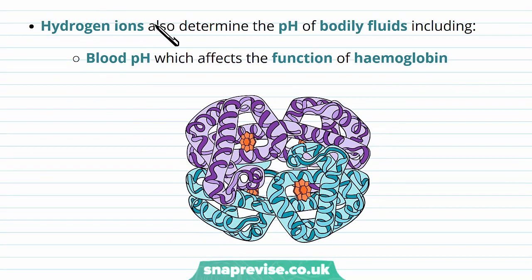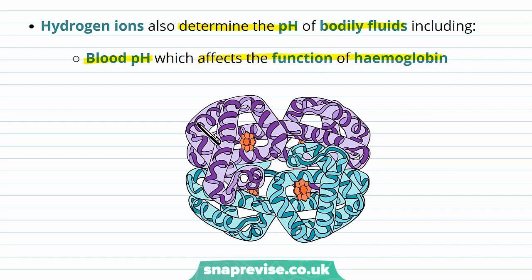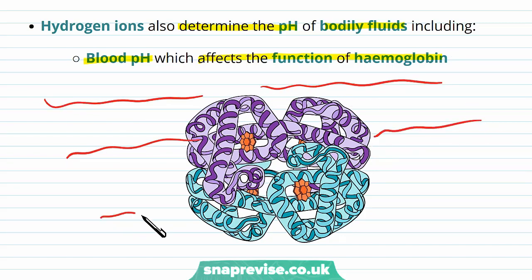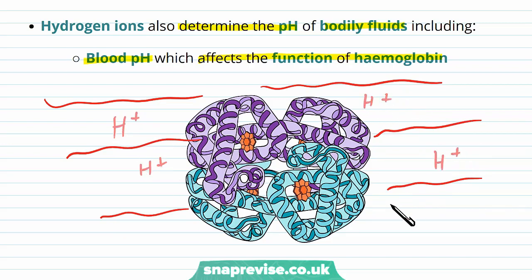Hydrogen ions are also what determines the pH of any fluid, including bodily fluids. For example, blood pH must be maintained, otherwise it can affect the function of haemoglobin. Haemoglobin molecules exist in the blood, specifically in the blood cells, and the pH of the blood is determined by the level of hydrogen ions in the blood. The pH measure of anything is how many hydrogen ions there are.